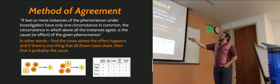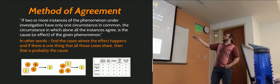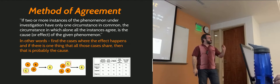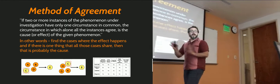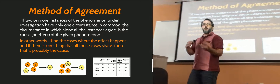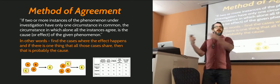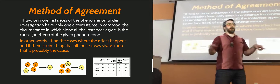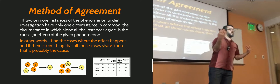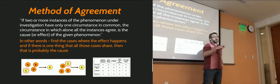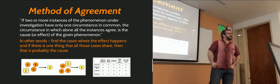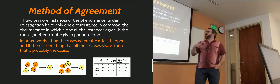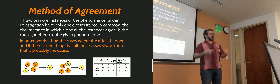Notice what Mill says: the circumstance in which alone all the instances agree is the cause or effect. Wait — which is it? Is it the cause or the effect? This is one of the big weaknesses of Mill's method. We're not going to overcome this today; it's not until Wednesday that we start figuring out the directionality of a causal connection. All we're really going to get today is that there does seem to be some sort of causal connection.